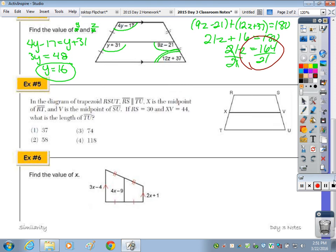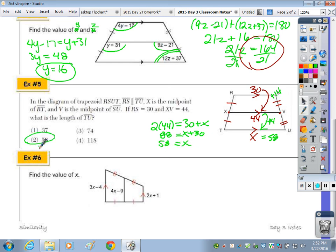The next question came from a state assessment. It says that in trapezoid RSUT, RS is parallel to TU. X is the midpoint of RT, V is the midpoint of SU, so therefore this is a median and is parallel. They're telling me that XV is 44, RS 30, find the length TU. Well, if I go from here to here, we add 14. So we must add 14 to 44, and we get 58. You could also say that when you double the median, you get 30 plus X, and 88 equals X plus 30. Subtract the 30, and X is 58. But it's the average.